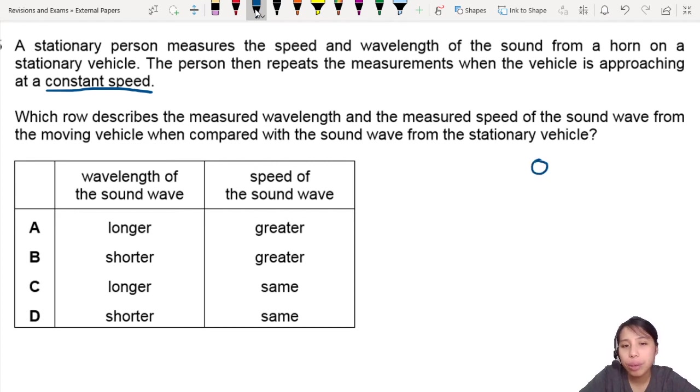You have a person. Okay. And what's happening to this vehicle? There is some kind of horn on the car. You know, like beep, beep, kind of horn. Beep! And then the vehicle is approaching at a constant speed V.